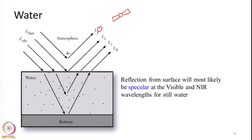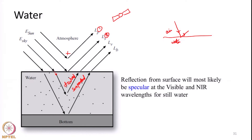The second component can be from the surface-reflected part of water. That is, whenever EMR travels from one medium to another — like from air to water — at the surface where the medium changes, some reflection will happen. So a part of the radiance reaching the sensor will be from the surface component of water. Water is also a little bit transparent — it is not completely opaque and will allow light or other wavelengths of EMR to pass through. Some portion of EMR will pass through the water body and interact with different dissolved or suspended materials, then come out of the water again and reach the sensor.